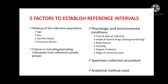Here are the five major factors to establish reference intervals. Number one is the makeup of the reference population, which includes their demographics — the age, the sex, genetic factors, and economic factors. Number two is the criteria for including or excluding individuals from reference sample groups. In establishing a reference range, it requires a much larger population of samples to be tested — around 120 or more samples are required.